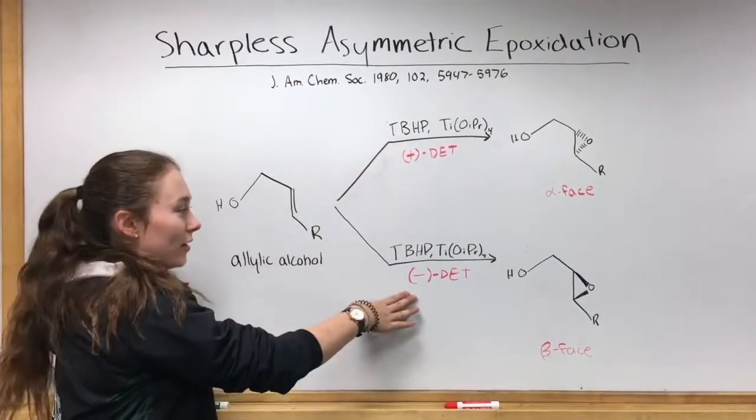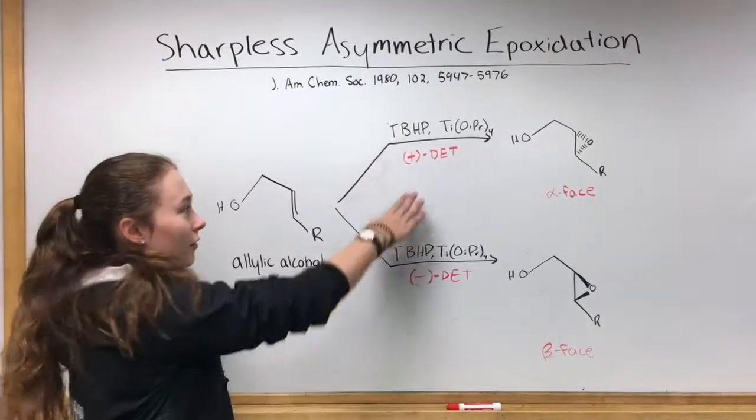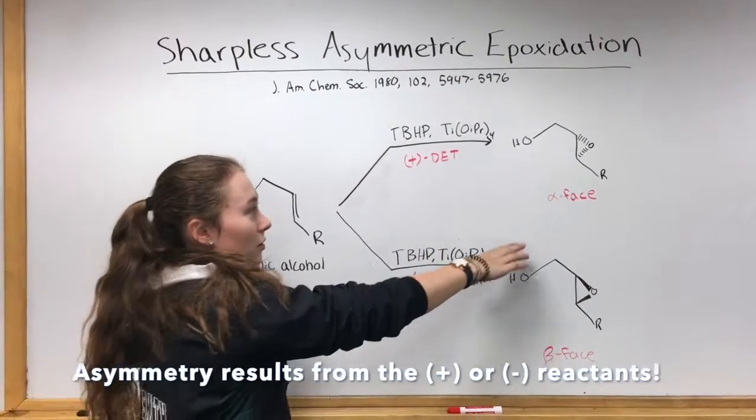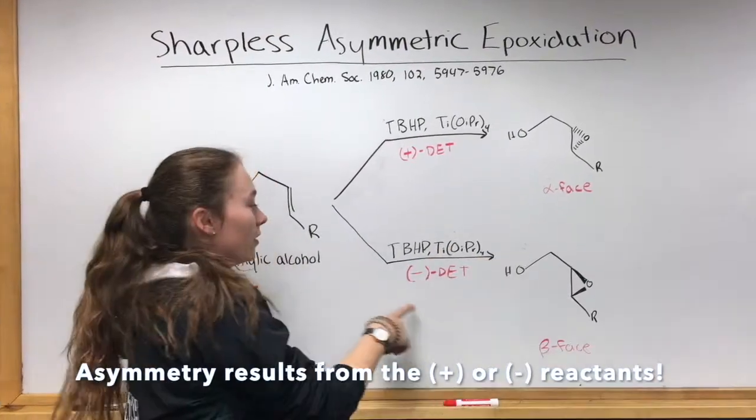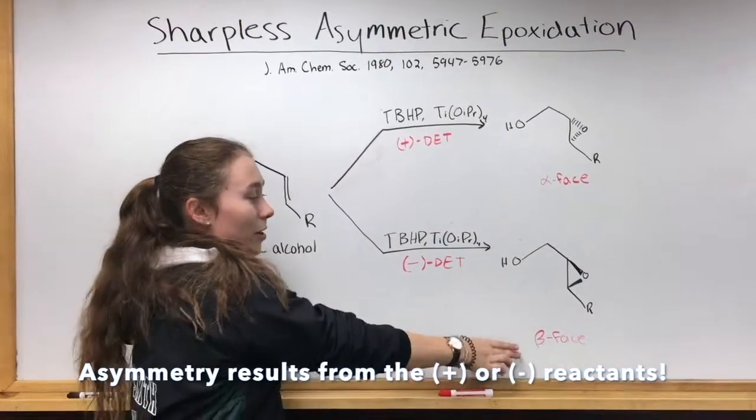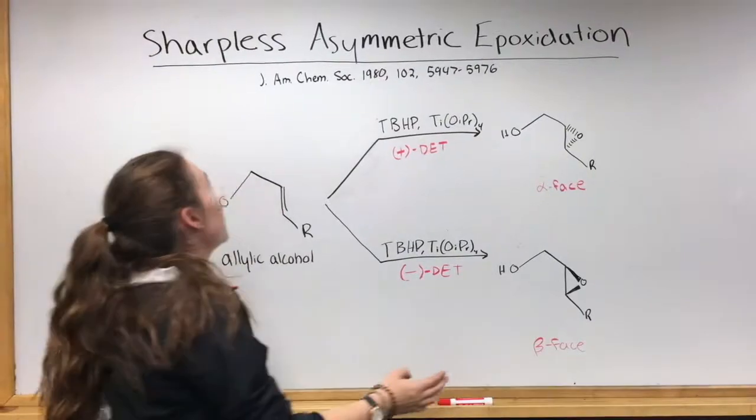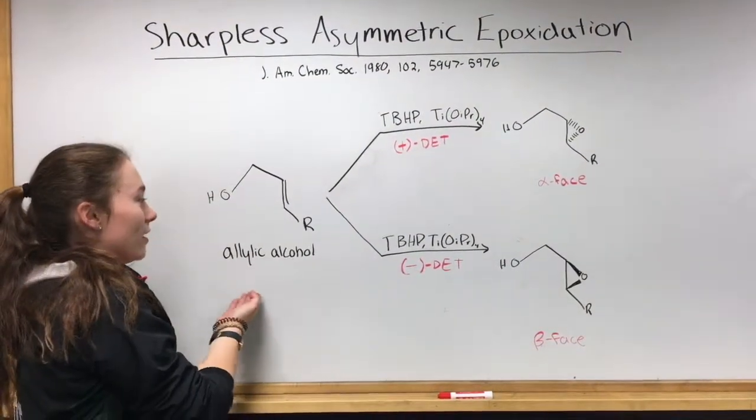Plus DET or minus DET is then added. If we have the plus compound, the epoxide will be on the alpha face, and the minus compound will have the epoxide on the beta face. This is all using the SAE model.